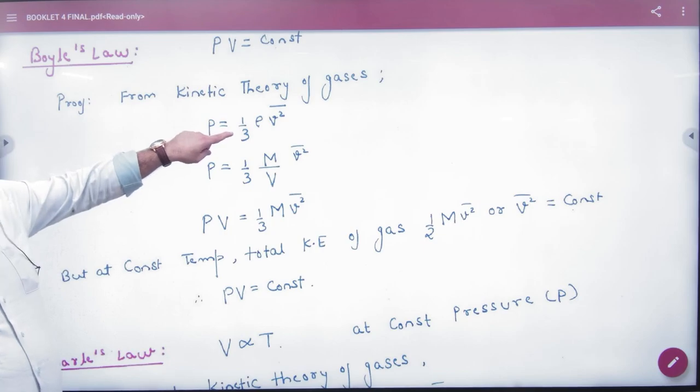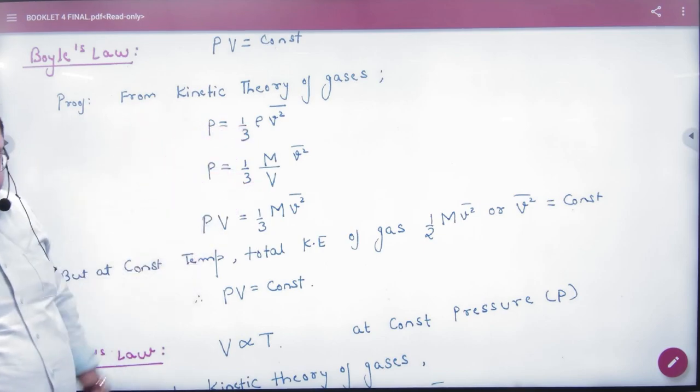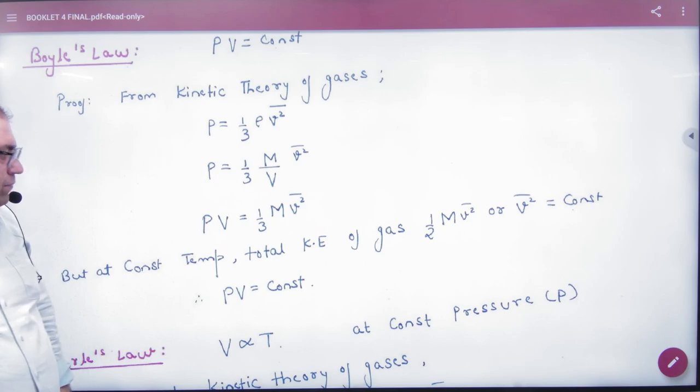Pressure equals 1/3 rho V². So density is mass by volume. Now for any gas at constant temperature...